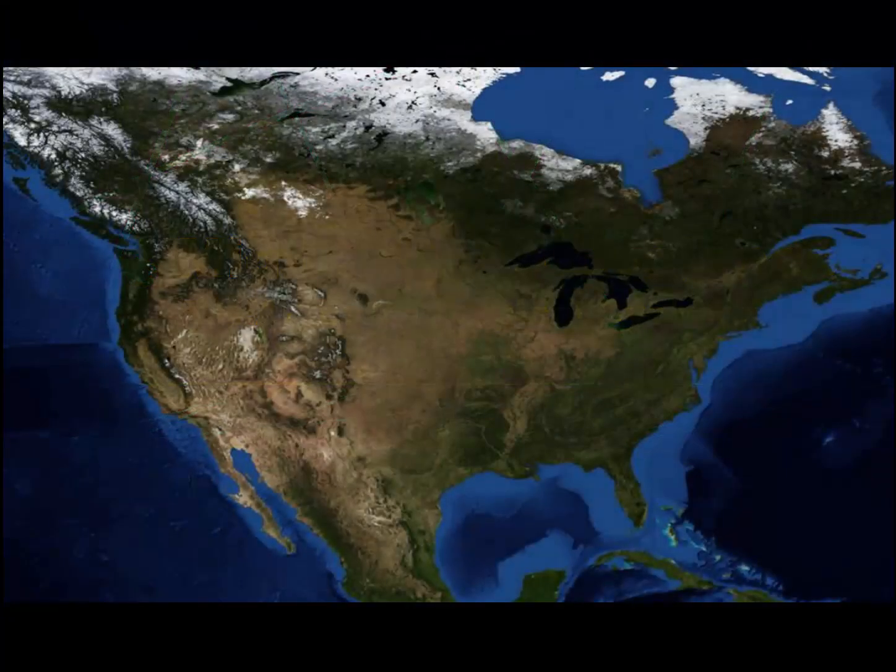Let's take a look at the United States. Keep in mind, in the continental United States we can almost always expect warmer air down in the southern part of the United States and cooler air further north towards Canada. So that means at some point there must be a separation between the warm and cool air. This frequently occurs along the stationary front that we refer to as the polar front.